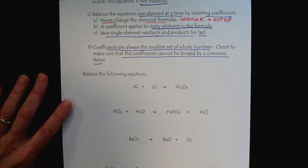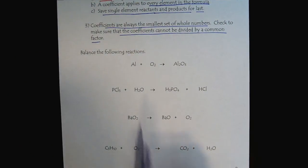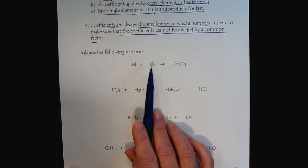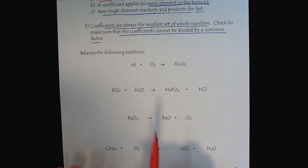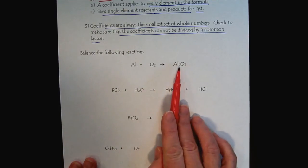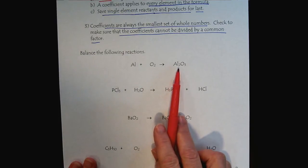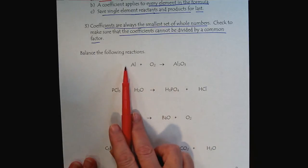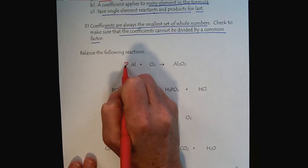Now let's practice together. Here we have aluminum reacting with oxygen to produce aluminum oxide. Since oxygen and aluminum are both by themselves, we'll focus on where they're mixed together. There's two of those, so we'll put a two there. We put a two in front of the aluminum.